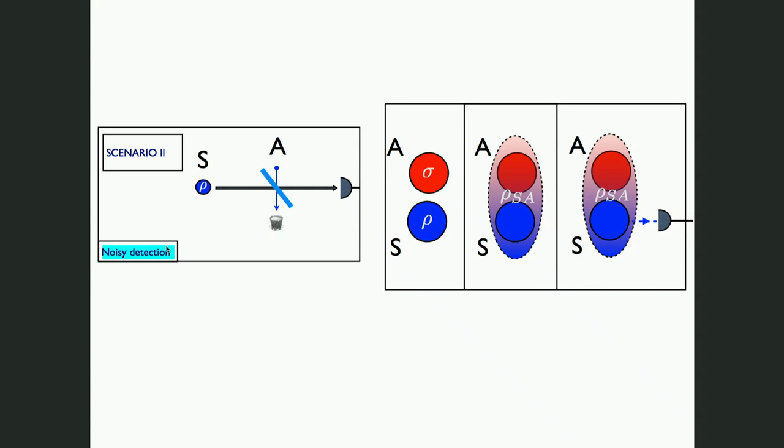There are other measurement processes we want to characterize which are not projective. For instance, there are noisy detection schemes: S is the system you want to probe, but it interacts with an external environment A. After the interaction, you perform a projective measurement on S. The typical example is a photo detector where not all photons present in a mode reach the detector because they are lost through interaction with other electromagnetic field modes.